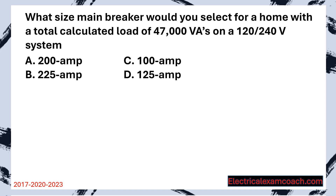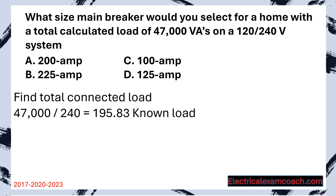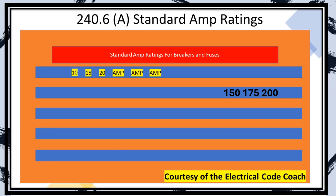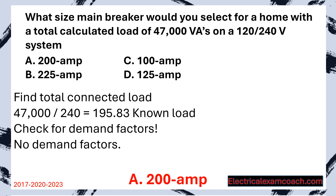What size main breaker would you select for a home with a total calculated load of 47,000 VAs on a 120/240 volt system? Step one: find our total connected load. They've done all the math for us — 47,000 are our total VAs. All we have to do is divide by the system voltage, which equals 195.83, and we would round down. Demand factors were already performed to get us that 47,000 value. We head to Table 240.6A and choose our next standard size — a 200 amp breaker. Great job.